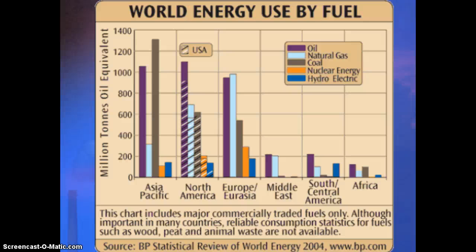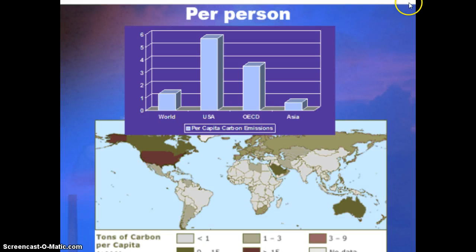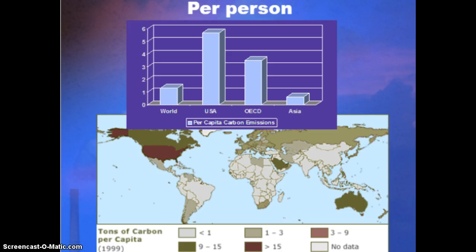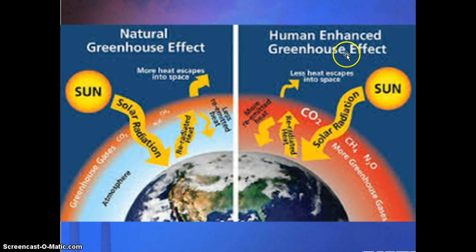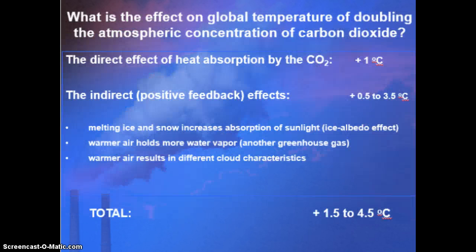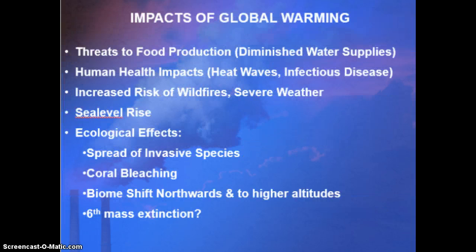Different parts of the world use different types of energy, but the US is the primary CO₂ emitter — especially on a per capita basis, we are far higher than comparable countries, largely due to our lifestyle. All of this CO₂ is increasing anthropogenic climate change, enhancing the greenhouse effect and trapping more solar radiation. Scientists calculate that doubling atmospheric CO₂ concentration would cause a temperature change of 1.5 to 4.5 degrees Celsius — significantly more in Fahrenheit — leading to major impacts. Pause and write these down.